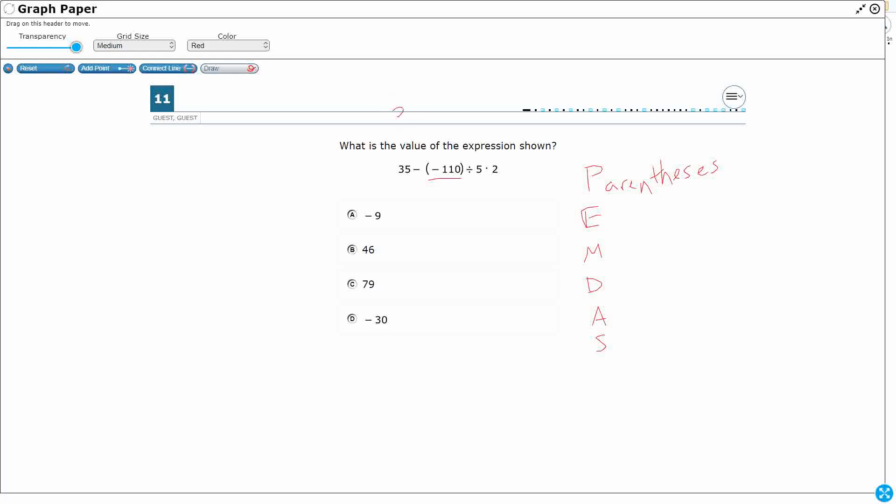So it looks weird if it just says 35 minus minus 110, so they put the parenthesis there as just kind of a buffer, but that is not actually an operation, so we don't have any of those.